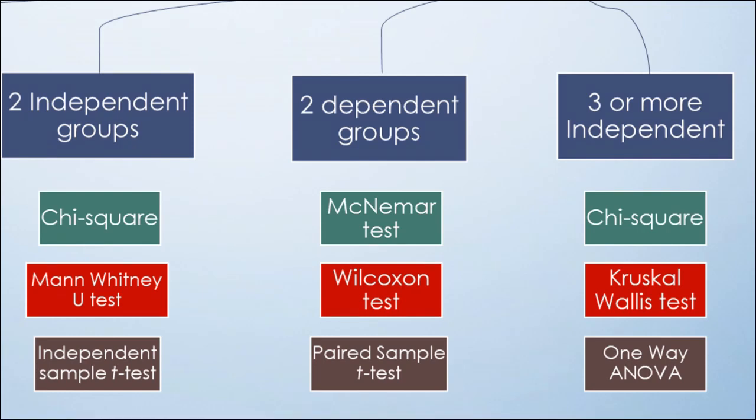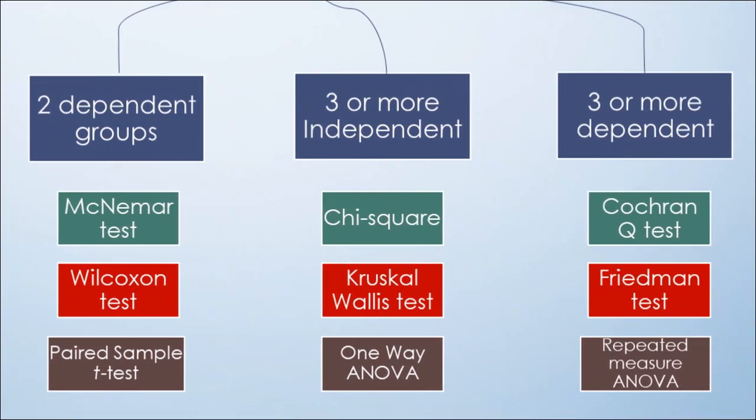With three or more independent groups, we use chi-square test for categorical data, Kruskal-Wallis test for non-parametric, and one-way ANOVA test for parametric data.